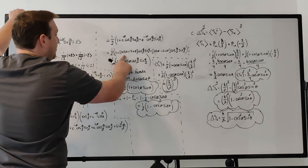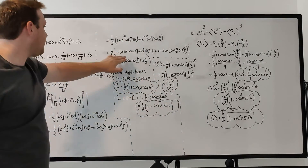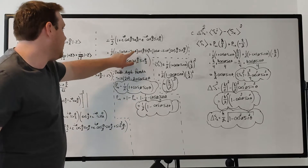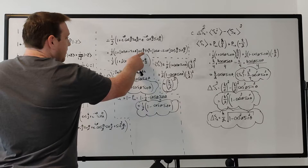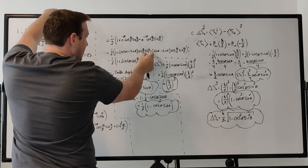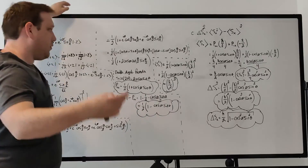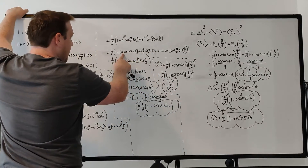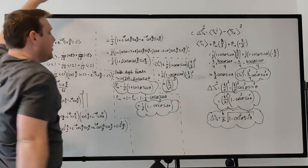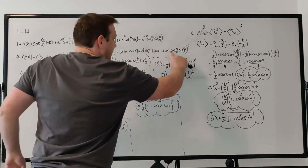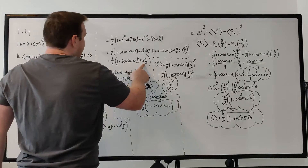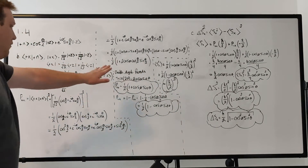Substituting Euler's formula into each of those terms, the i sine phi contributions cancel — there's a plus i sine phi and a minus i sine phi multiplying the same factor — so those cancel to zero. All that remains is cosine phi times cosine theta over 2 times sine theta over 2, appearing twice. So this simplifies to 1 plus 2 cosine phi times cosine theta over 2 times sine theta over 2, with the factor of 1 half still out front.